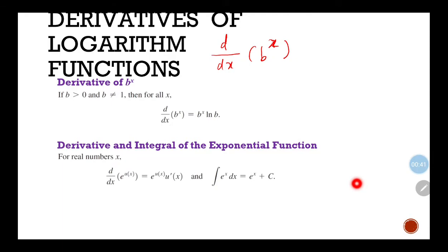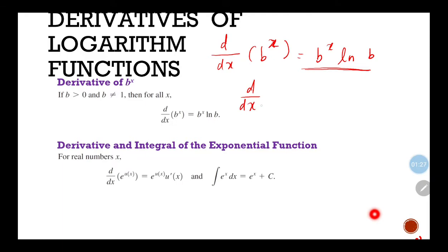This is the formula for the derivative of b to the power of x. The derivative of b to the power of x is b to the power of x times ln(b).